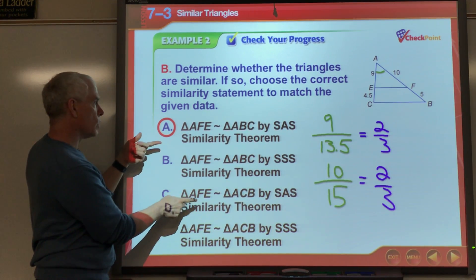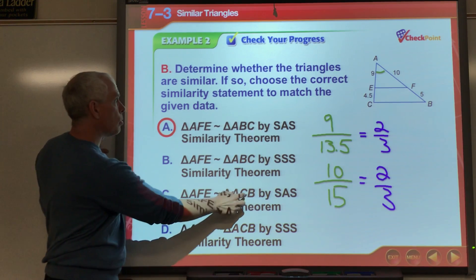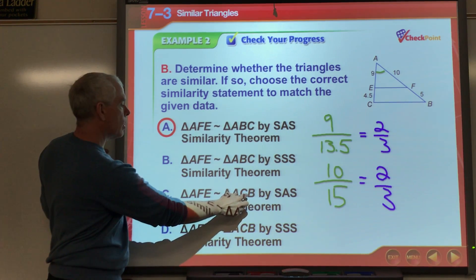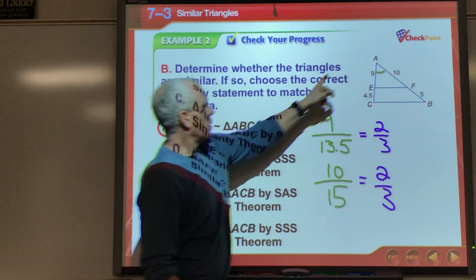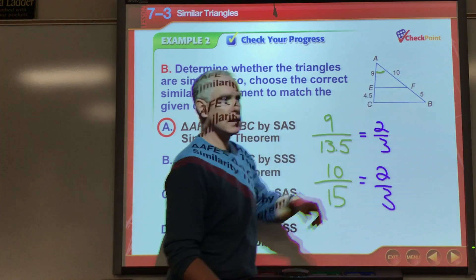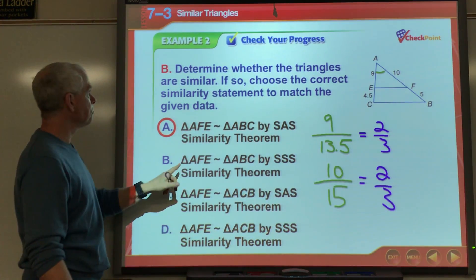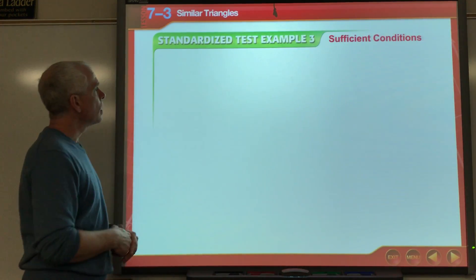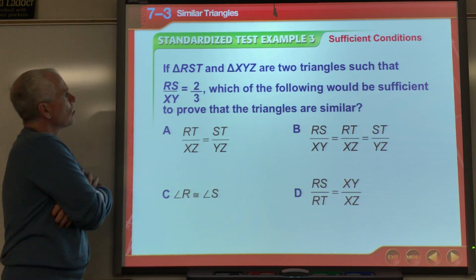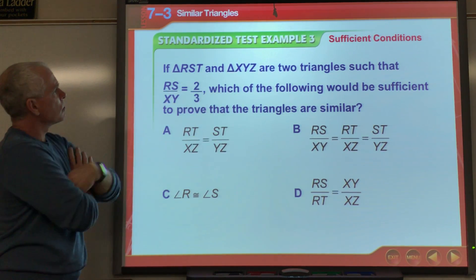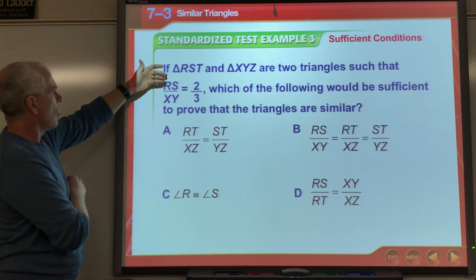Notice there are two SAS options shown — what's wrong with one of them? They have the similarity statement incorrect: AF compared to AC is not a valid corresponding-parts comparison, so that statement is wrong.